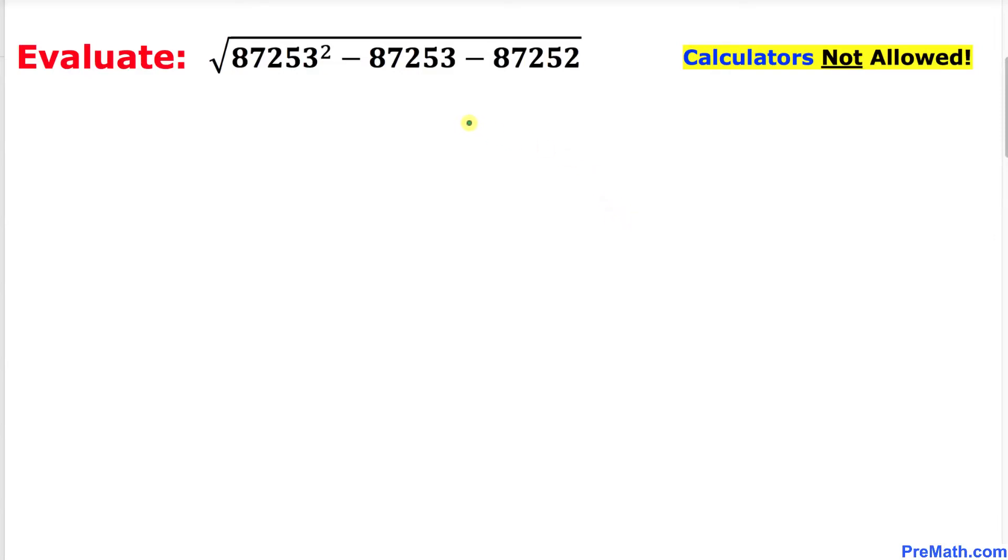Welcome to pre-math. In this video lesson we are going to find the value of this radical problem: square root of 87253 squared minus 87253 minus 87252, and we are not supposed to be using calculators of any kind.